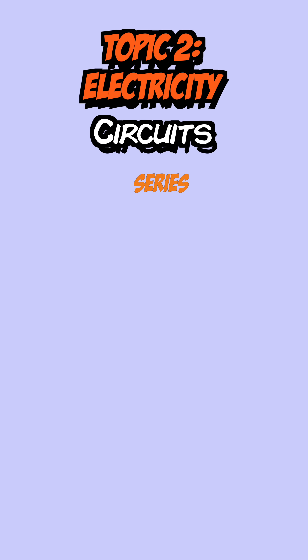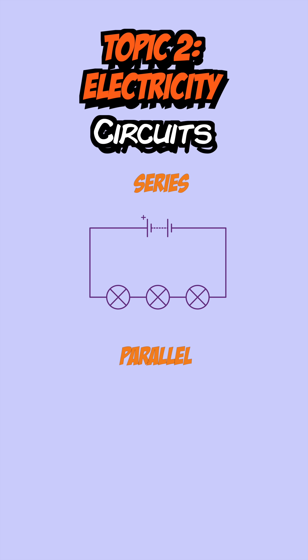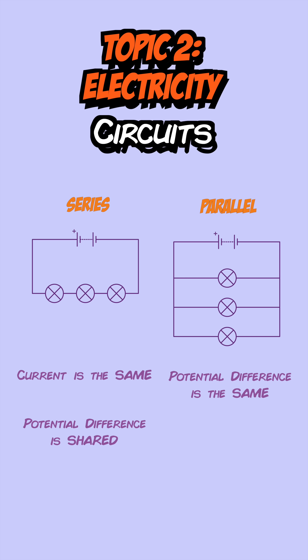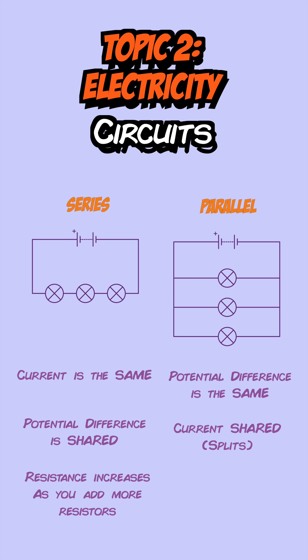Circuits can be one of two types: series circuits, where all the components are on one loop, and parallel circuits, when they're on different loops. In series circuits, current is the same everywhere and the potential difference is shared between the components. In parallel circuits, potential difference is the same on each branch and current splits at each branch. Resistance increases as you add more resistors in series, but it decreases when you add them in parallel.